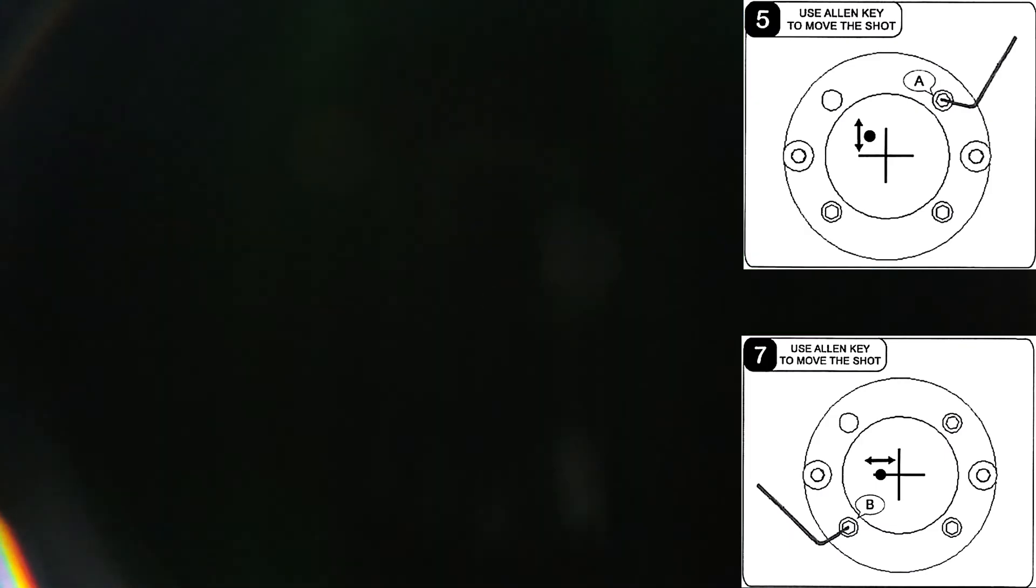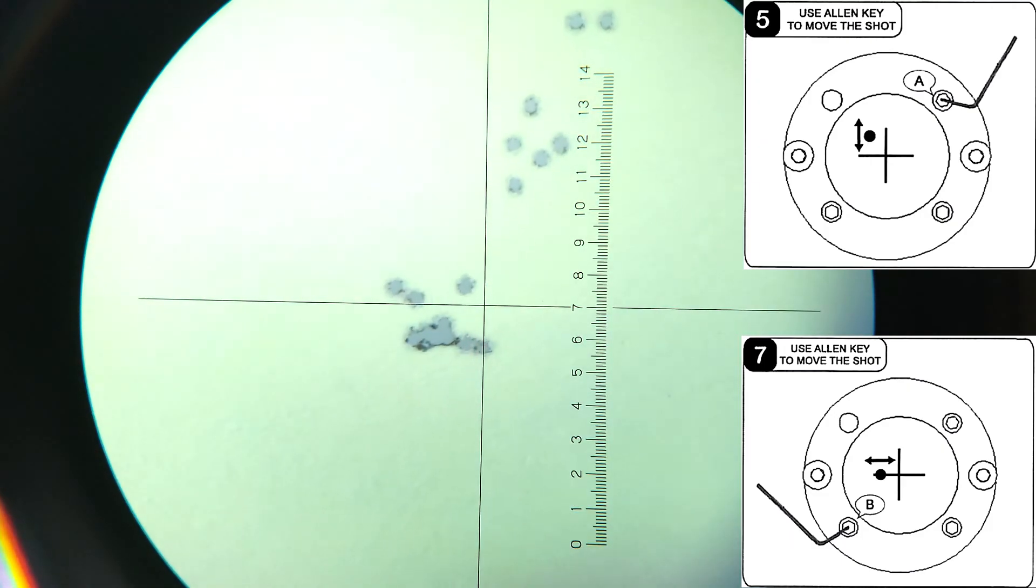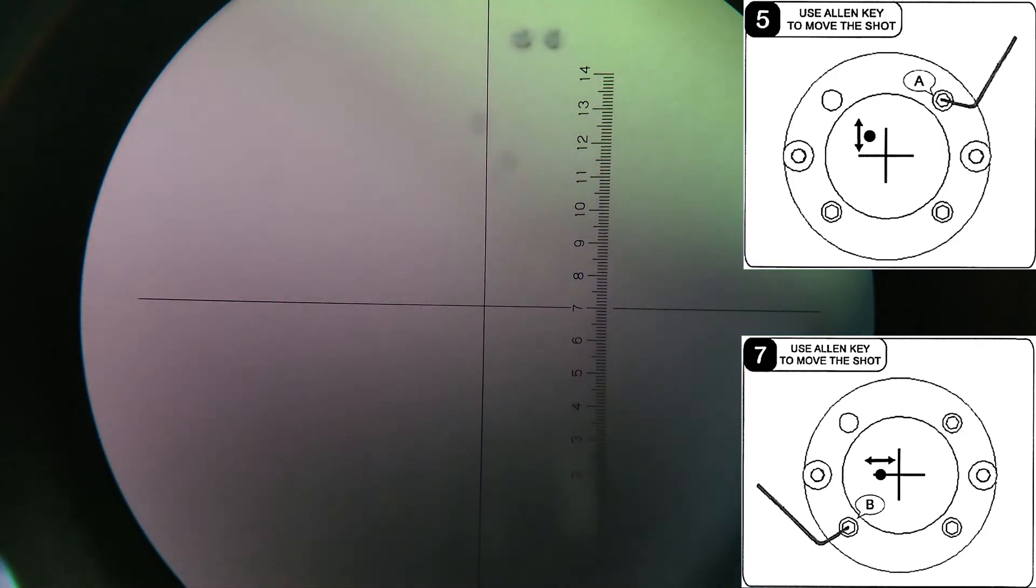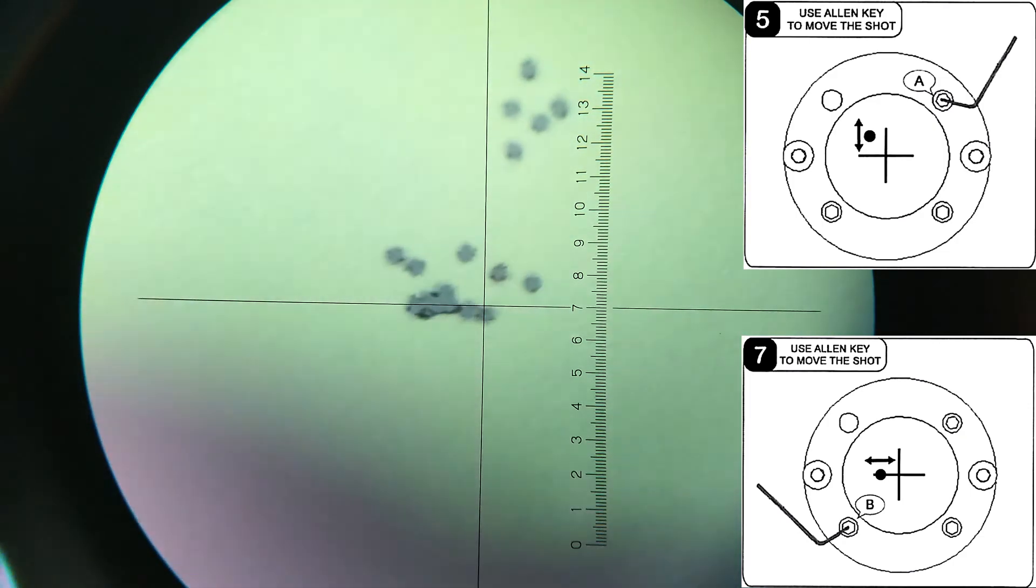We're going to continue making adjustments until we get to a point where that dot starts getting closer and closer to our center crosshair. Now that I've done it left and right repeating the steps that before mentioned we can see that that spot is landing dead center on our crosshair.